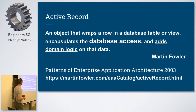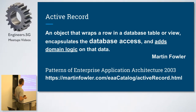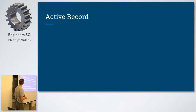ORM is, as you might know or not know, object-relational mapping, and it allows us to build a nice abstract layer between our application, our objects, and the database itself. We're going to talk about ActiveRecord as one of the implementations of ORMs. ActiveRecord is actually implementing the ActiveRecord pattern, which was first introduced in the book 'Patterns of Enterprise Application Architecture' in 2003 by Martin Fowler.